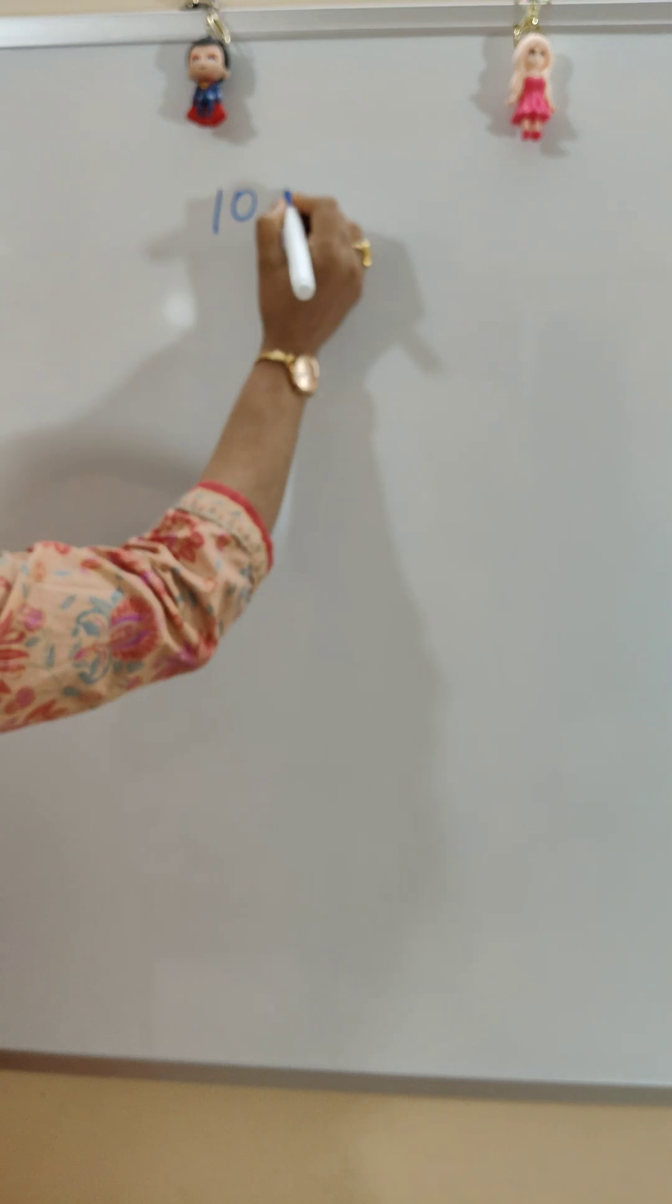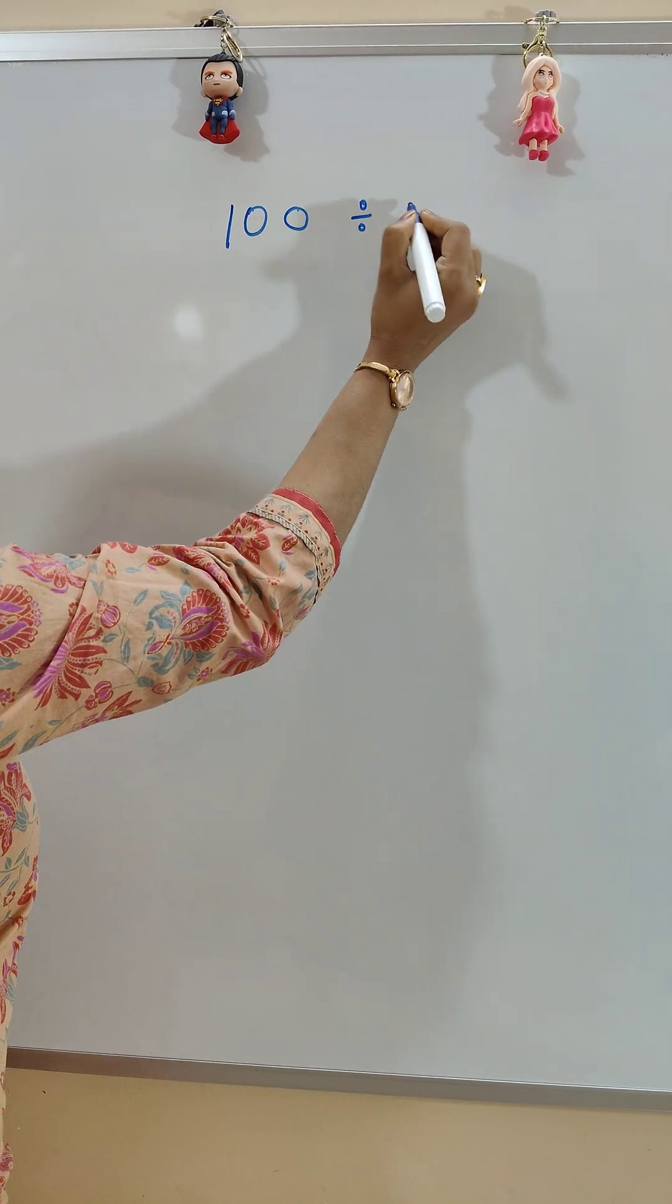Today we will do division using repeated subtraction. 100 divided by 20.